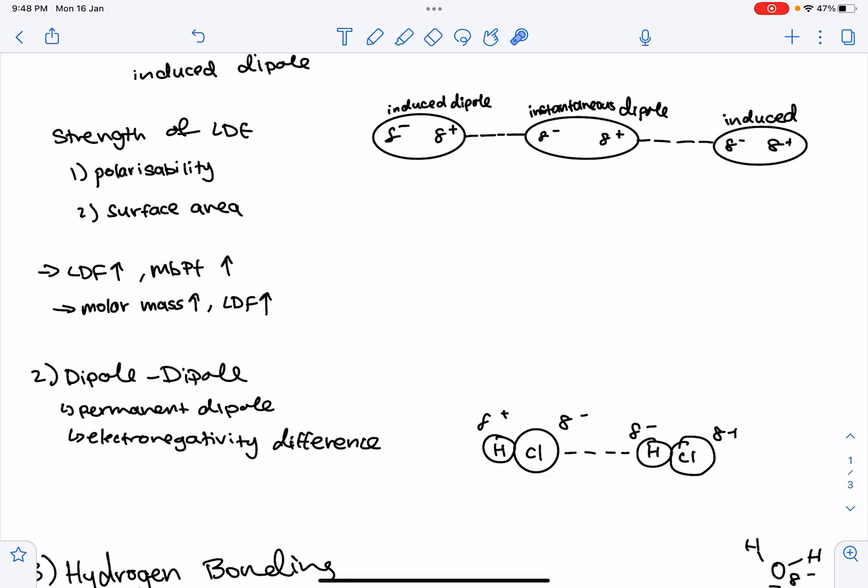So it arises due to a difference in electronegativity between the two elements, and one has a lower electronegativity value and a partially positive charge, and the higher electronegativity value and a partially positive. Sorry, partially negative. The force of attraction occurs between the partially negative charge of one atom, and then the partially positive charge of the other atom.